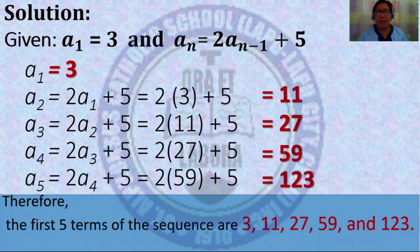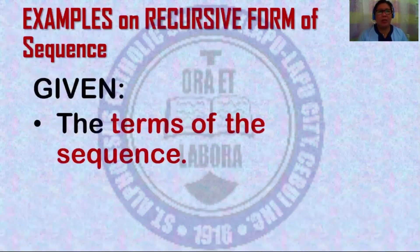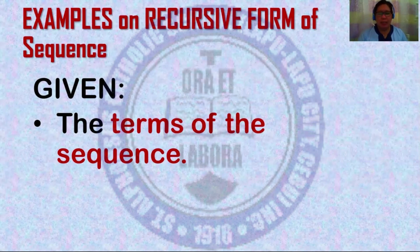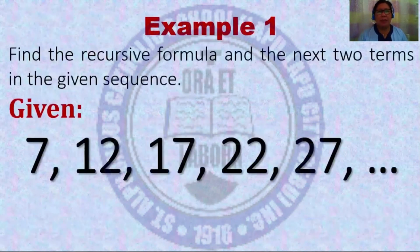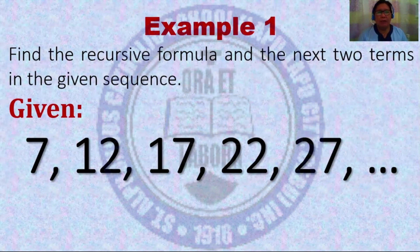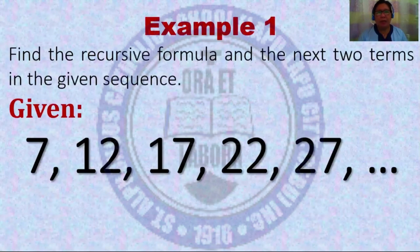Do you have questions? If there is none, let's proceed. Next, I'm going to give you examples on recursive form of a sequence given the terms of the sequence. Example number one: find the recursive formula and the next two terms in the sequence, given seven, twelve, seventeen, twenty-two, twenty-seven, and so on.